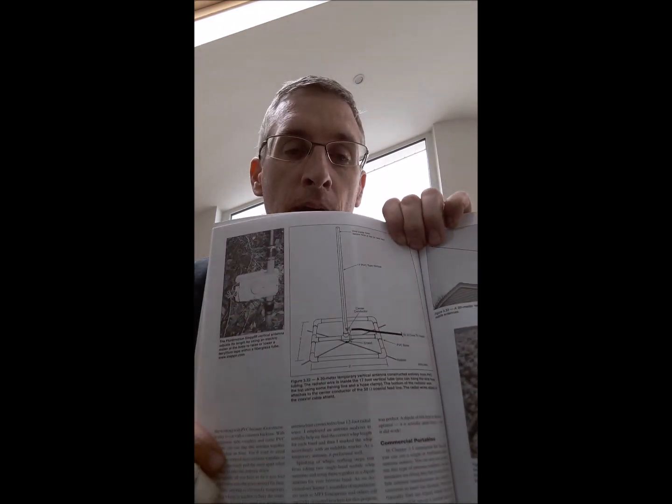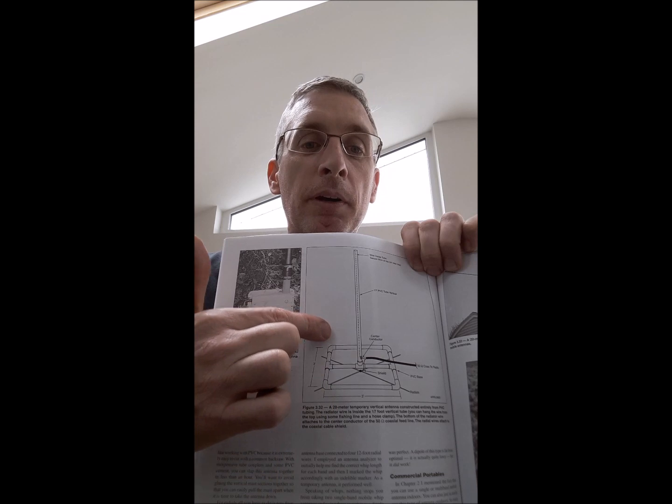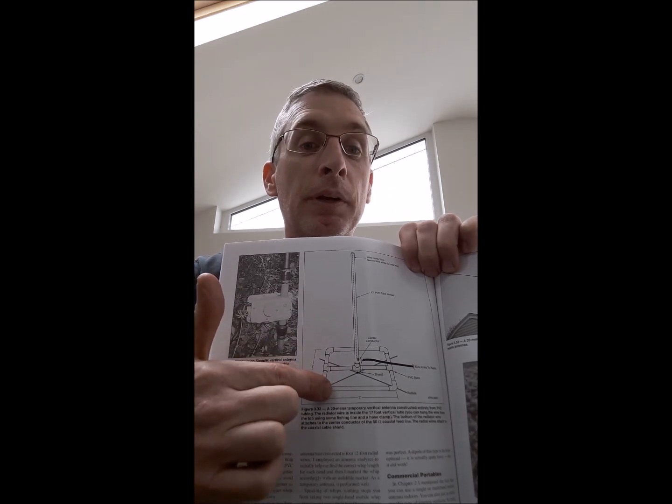Now I have a doublet on the house already, a 22 meter one, and it works very well. But I don't have a vertical. I do want a vertical and something I can bring around with me as well.